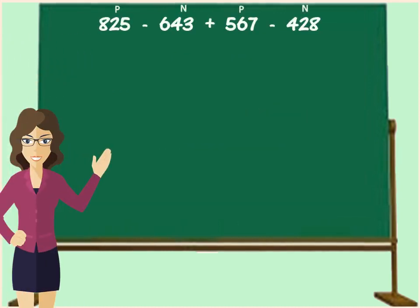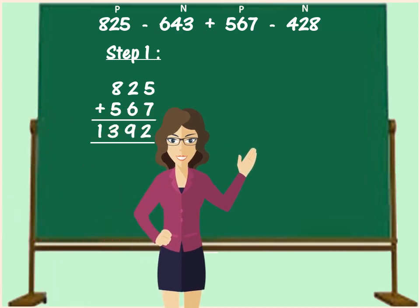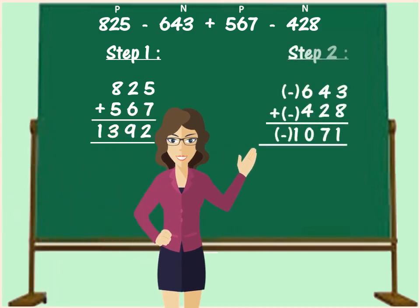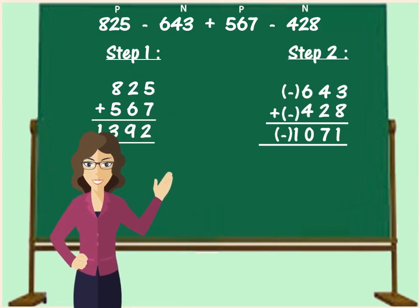We already know that the sum obtained in step 1 is 1392 and the sum obtained in step 2 is minus 1071. In step 3, from 1392, we will subtract 1071 and the difference is 321.